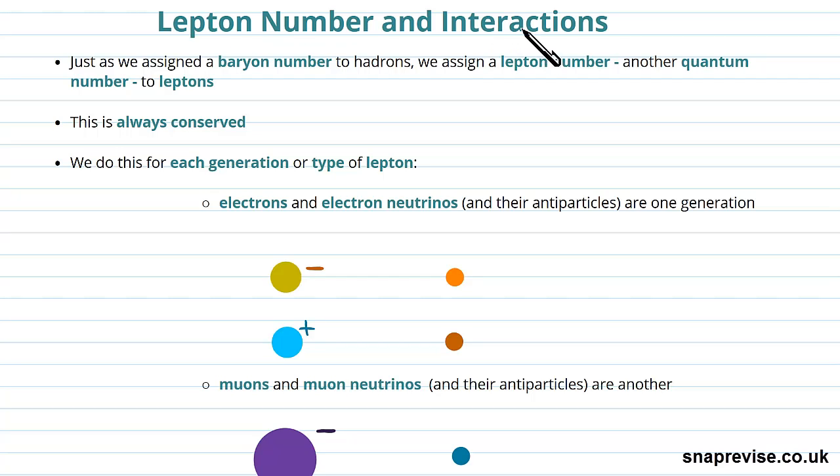In this video we're going to look at lepton number and interactions. We've seen previously baryon number. Just as we assigned a baryon number to hadrons, specifically baryons, we assign a lepton number, which is another quantum number, to leptons. And just like baryon number, this is always conserved.